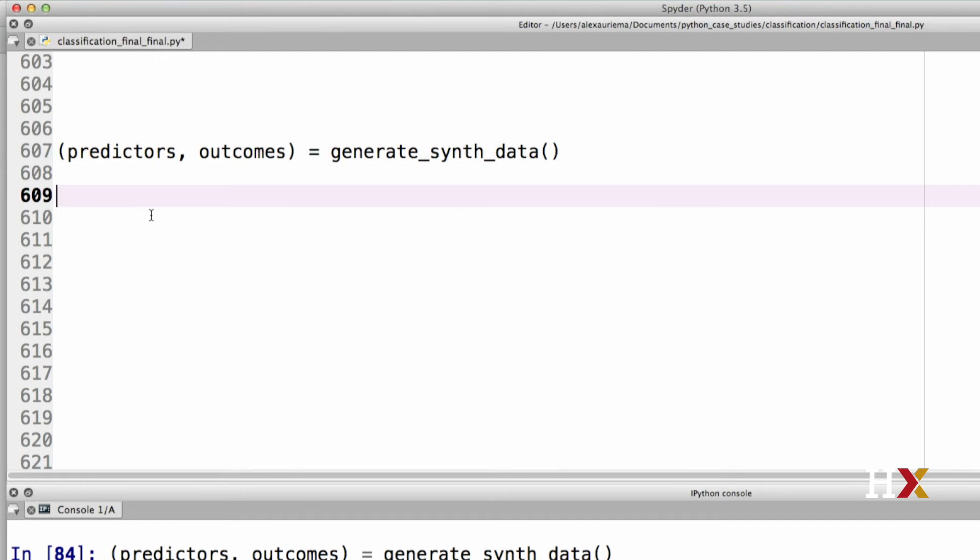We'll start with a value of k equals 5. We'll provide a file name for our plot. Let's just call this knnSynth5.pdf. We'll then need to provide limits for our plot. For x, we'll go from minus 3 to 4. And the same for y, minus 3 to 4. And for step size, we'll be using 0.1.